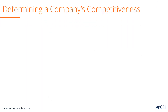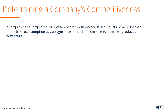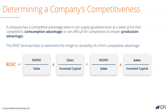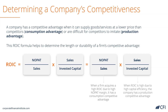We can also use return on invested capital to determine a company's competitive advantage. A company has a competitive advantage when it can supply goods or services at a lower price than others — this is considered a consumption advantage. Alternatively, it is a production advantage if a company can supply products or services that are hard to copy. By expanding the ROIC formula, net operating profit after tax divided by sales is a margin ratio, and sales divided by invested capital is a turnover ratio. When a firm has a high ROIC due to a high net operating profit after tax margin, it has a consumption competitive advantage. When its ROIC is mainly due to invested capital turnover, it has a production competitive advantage.